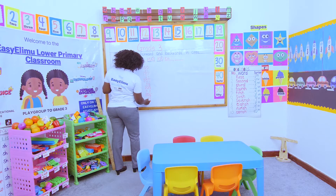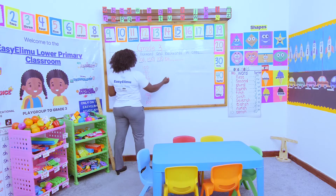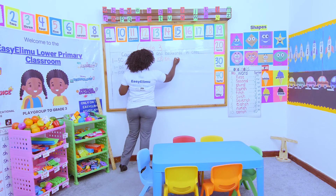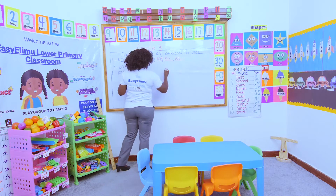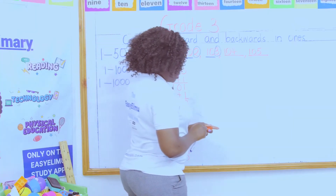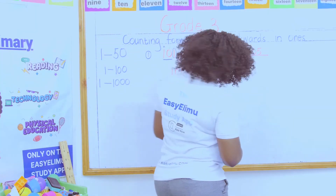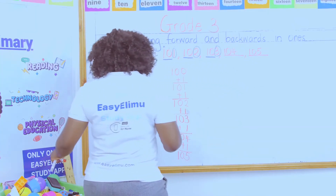If I add 104 plus 1, I get 105. So the missing number here is 105. Very good!